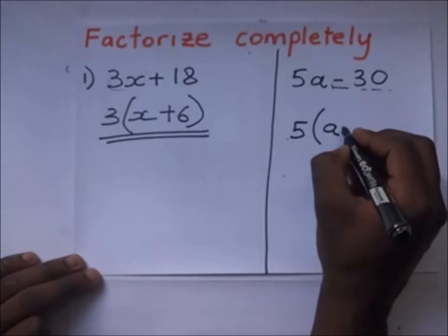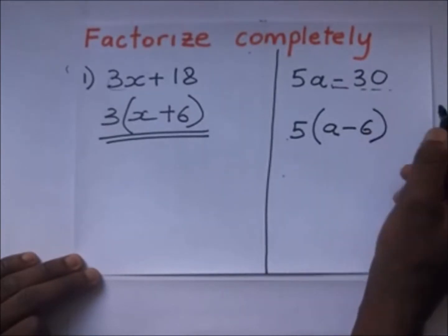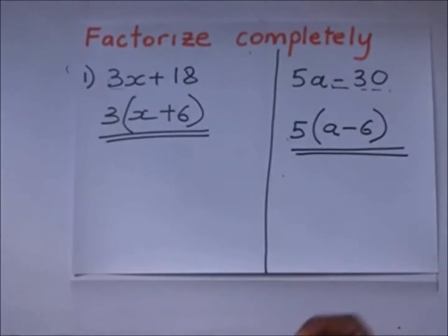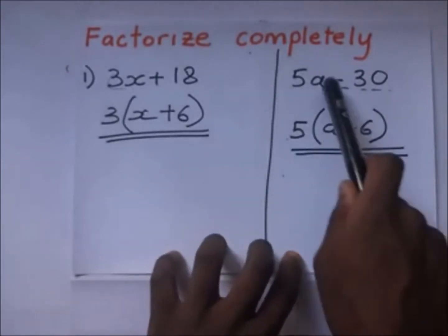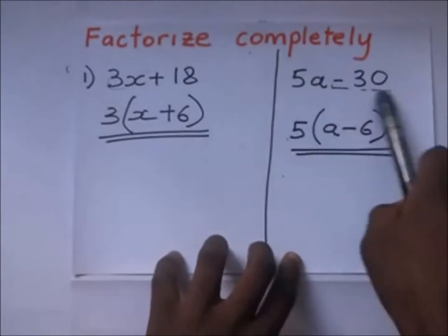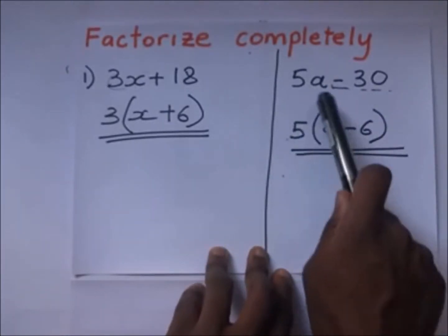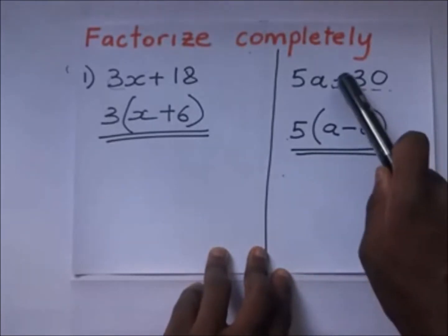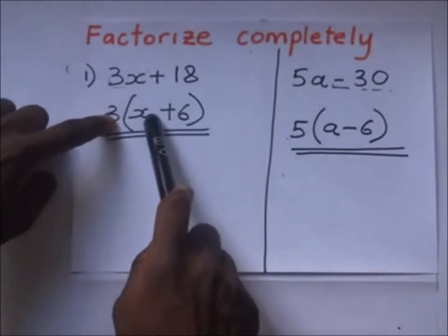Remember, a negative divided by a positive gives a negative answer. So negative 30 divided by 5 gives negative 6. The answer is 5(a − 6). Notice that when you open the brackets it gives back the same expression: 5 times a is 5a, and 5 times negative 6 is negative 30.